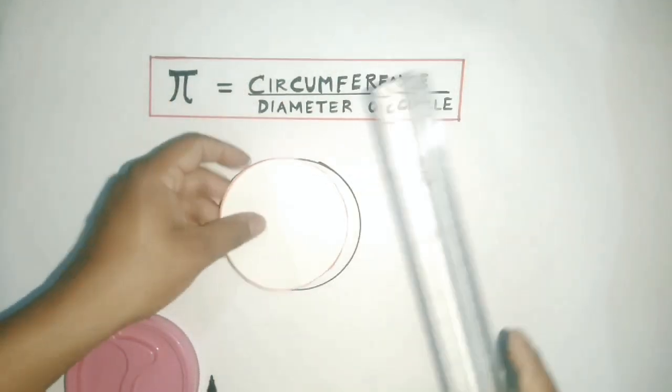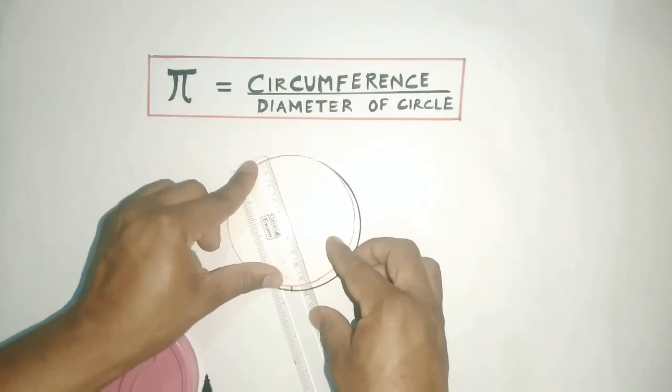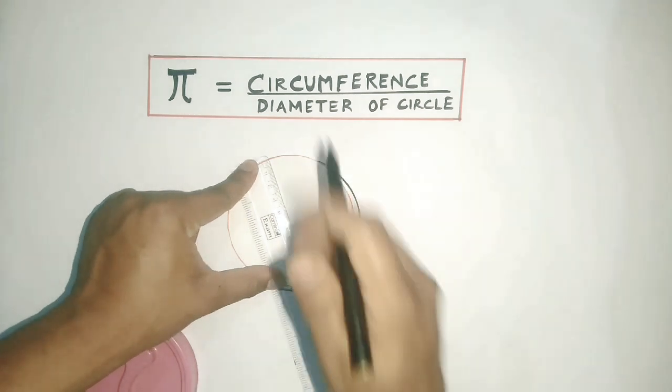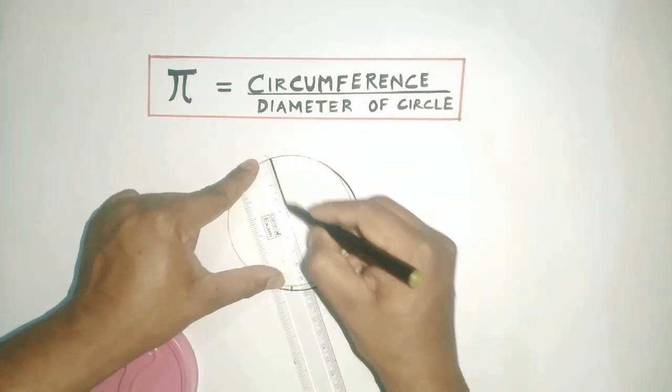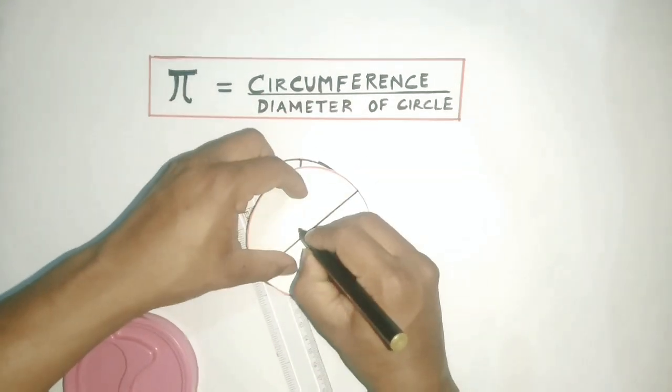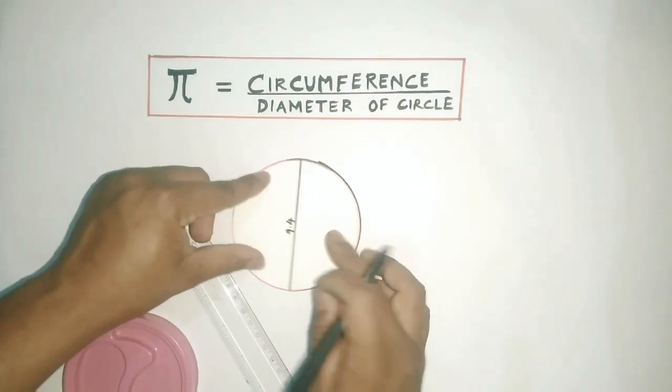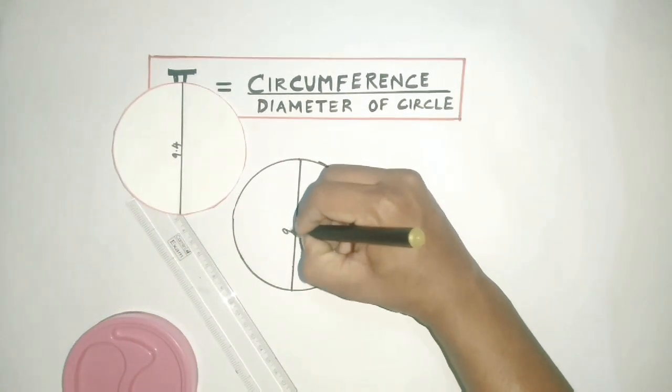If you carefully observe, the diameter is 9.4. So this is the diameter. This circle is similar, therefore the diameter of this circle is 9.4.